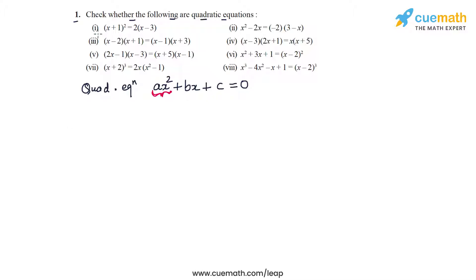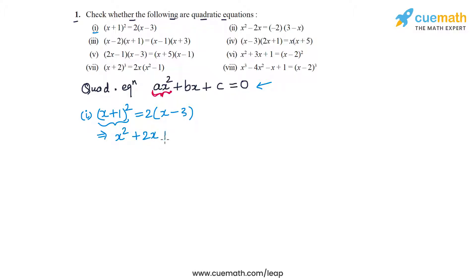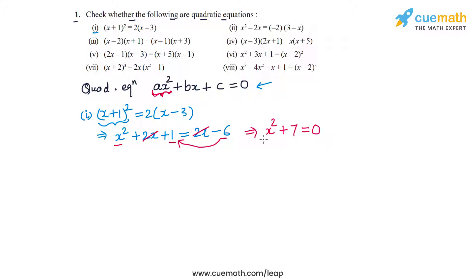Let's start with checking part one. The equation is (x + 1)² = 2(x − 3). We'll try to write this equation in the form ax² + bx + c = 0. Expanding the left hand side, (x + 1)² gives x² + 2x + 1, and on the right side we get 2x − 6. The 2x terms on both sides cancel out, and we have x² + 1 − (−6), which gives x² + 7 = 0.